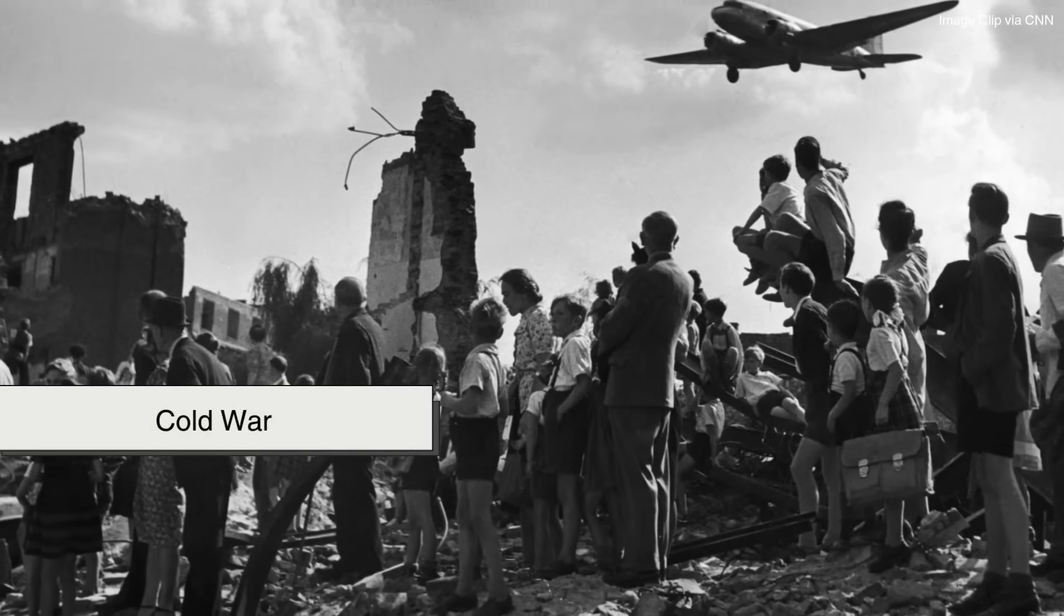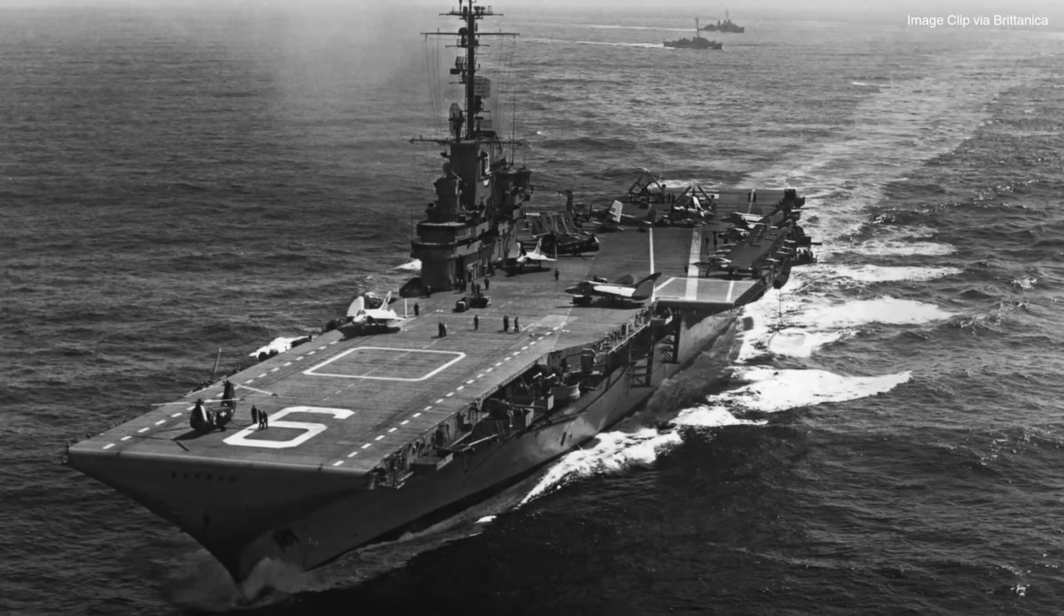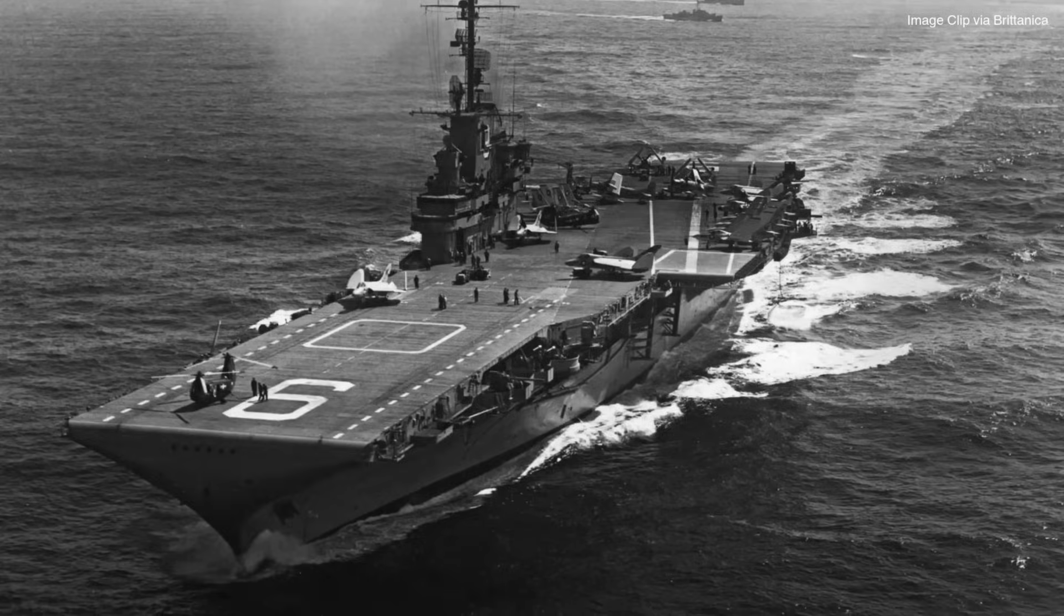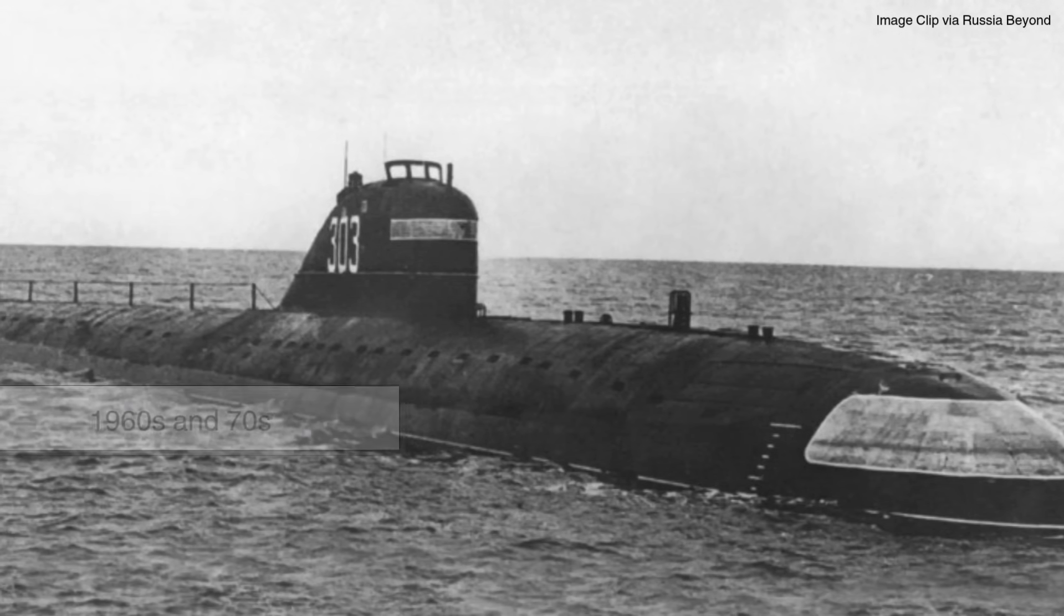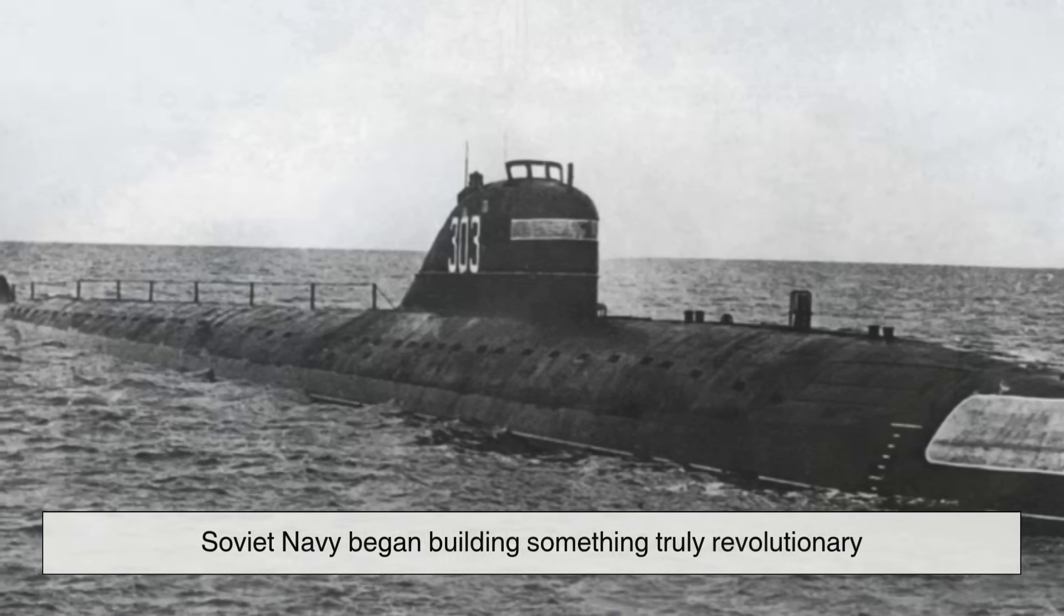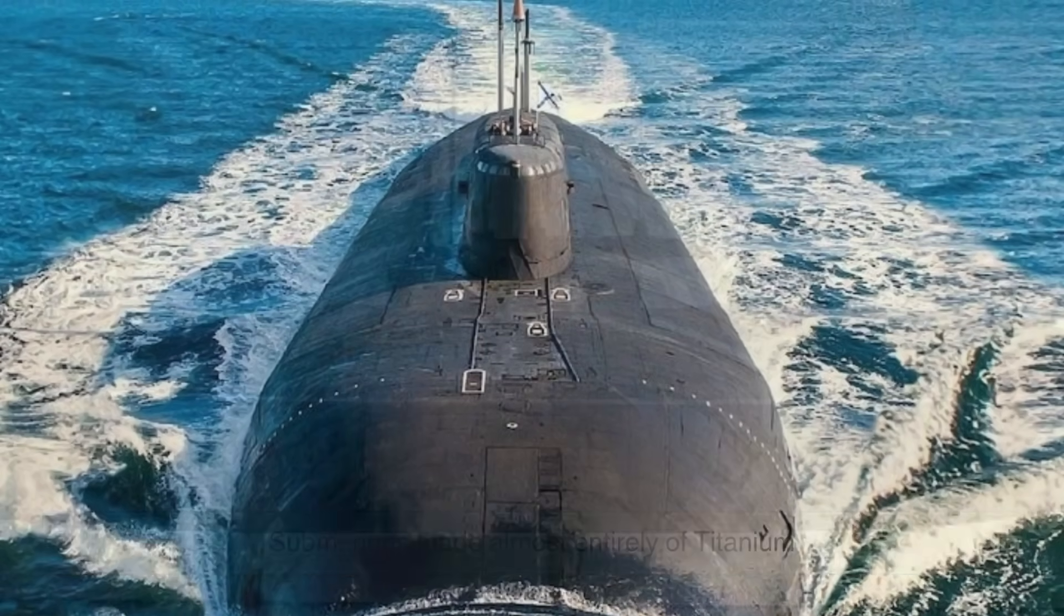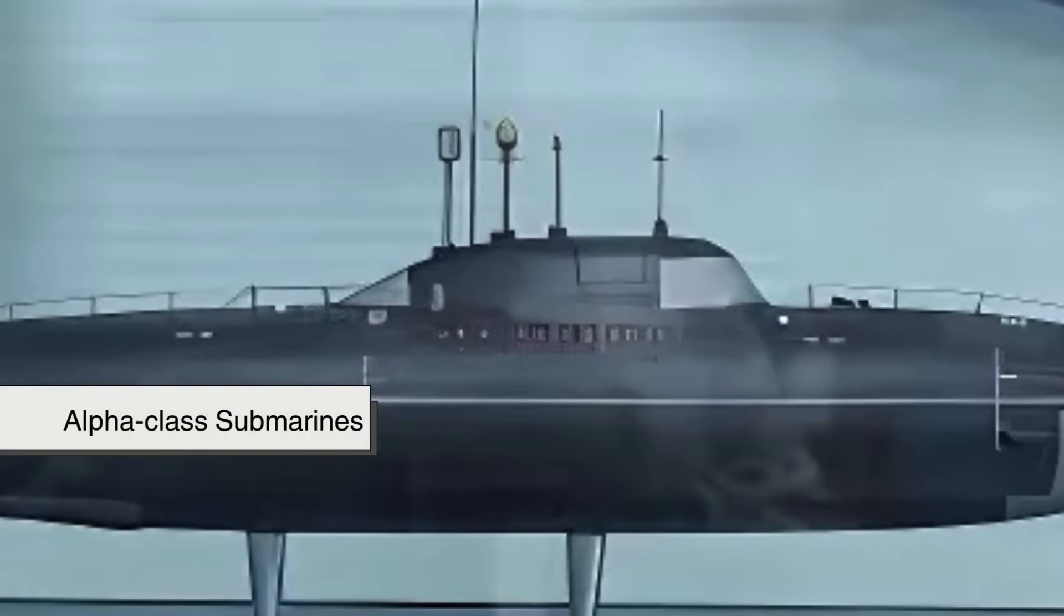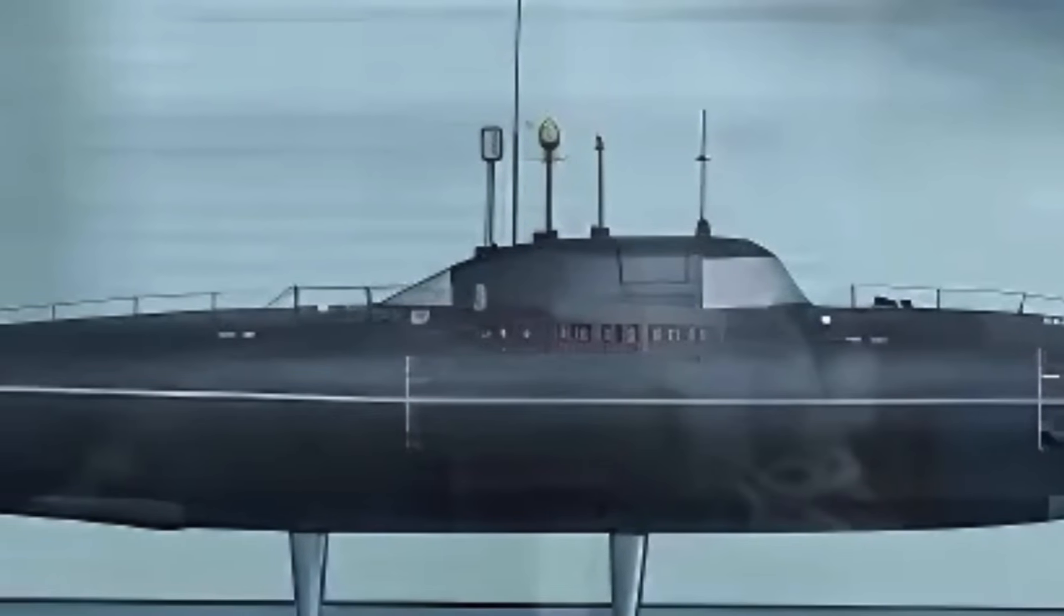Back in the Cold War era, both the United States and the Soviet Union were racing not just into space, but into the depths. In the 1960s and 70s, the Soviet Navy began building something truly revolutionary. Submarines made almost entirely of titanium. These were the Alpha-class submarines. Sleek, fast, and incredibly deep diving.